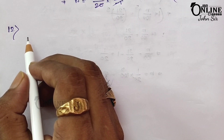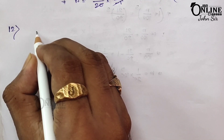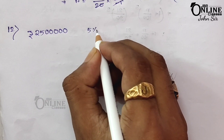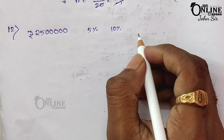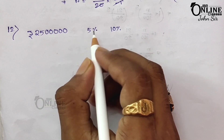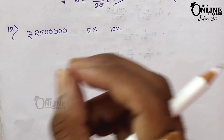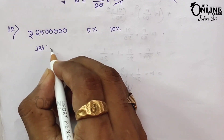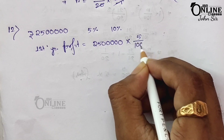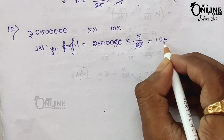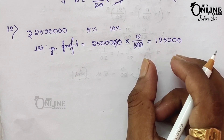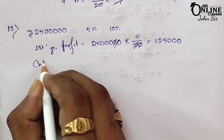Sum number 12: Mahindra set up a factory investing 25 lakh. During the first two years his profits were 5 percent and 10 percent respectively, with each year's profit calculated on the previous year's capital. Calculate his total profit. First year profit = 25 lakh × 5/100 = 1,25,000. So first year profit is rupees 1 lakh 25,000.